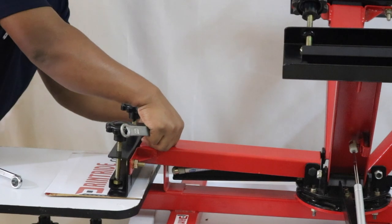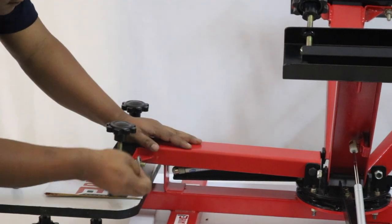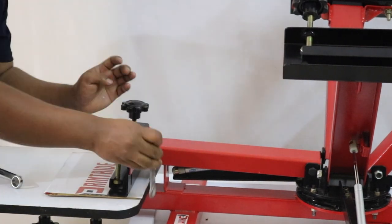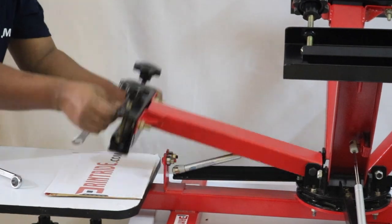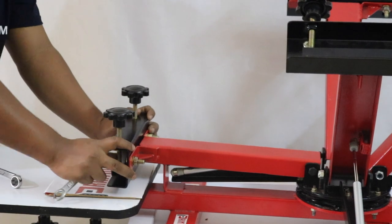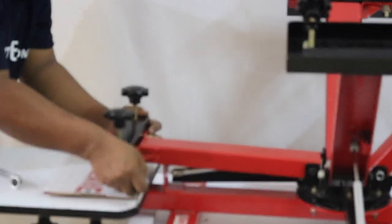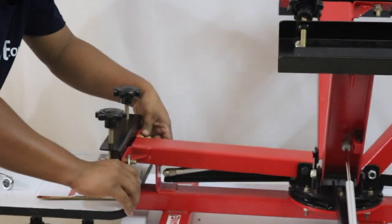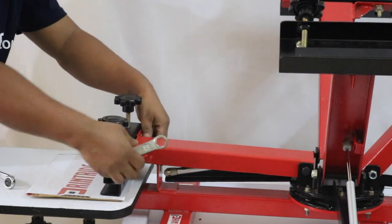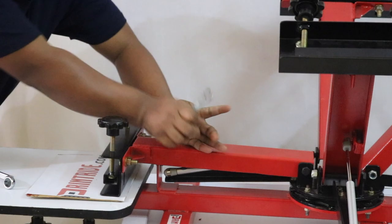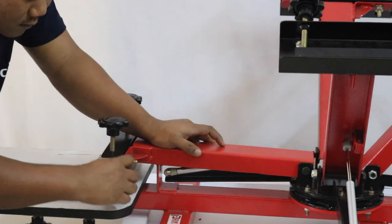Just remember, while printing you should adjust the off contact. For that you can use any board, like this cardboard we are using here. It should be a little bit higher than the palette. So like that you adjust all four arms.